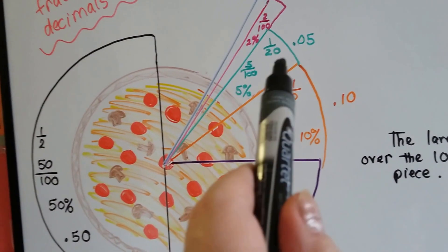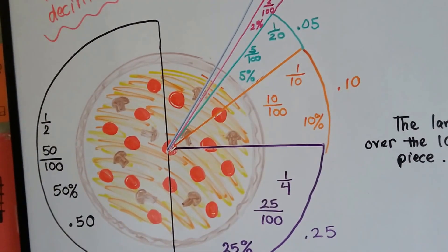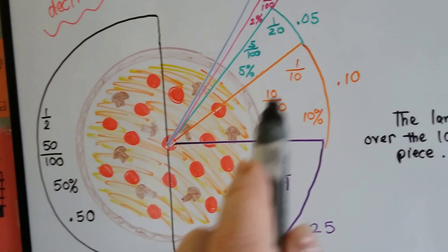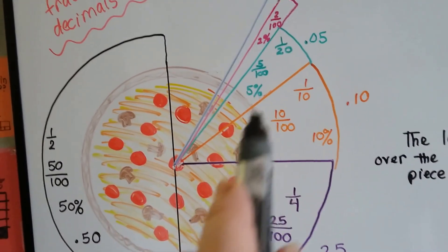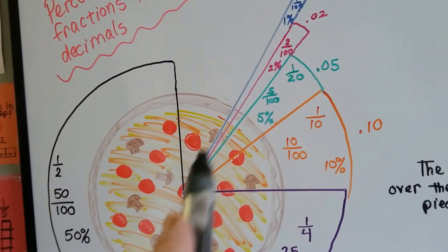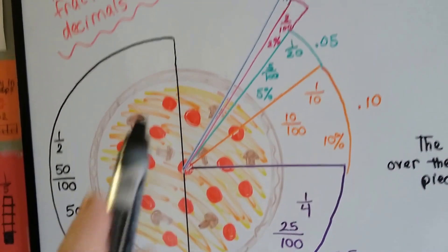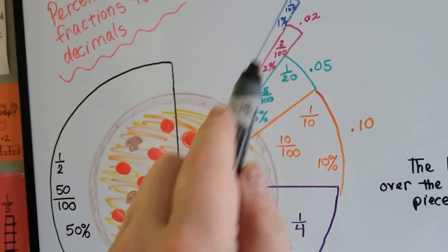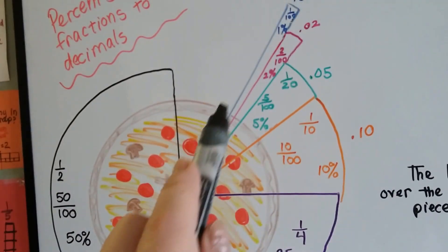This is 5 percent of the pizza. So the smaller the percentage gets, and the decimal gets, the smaller the piece gets. Here's 2 percent of the pizza. If the pizza was cut into a hundred pieces, they would all be this size of this blue one. One percent.